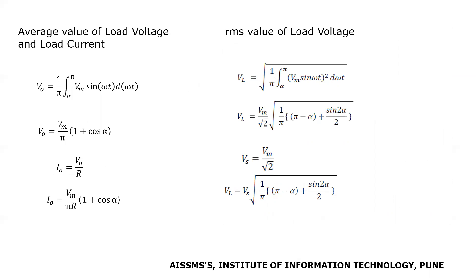The average output voltage is calculated using the equation: V_avg = (Vm / π) × (1 + cos α). The average output current is I₀ = (Vm / π R) × (1 + cos α), where the inductor acts as a filtering element to filter ripples in output voltage and current waveforms. The RMS load voltage is calculated using: V_rms = (Vm / √(2π)) × √(π − α + (sin 2α) / 2). This concludes the working of the single-phase semi-controlled AC to DC converter connected to RL load.